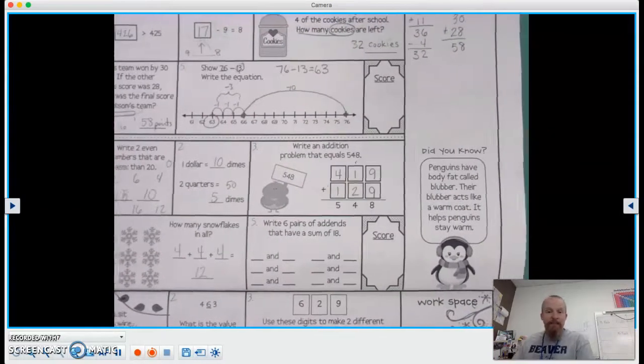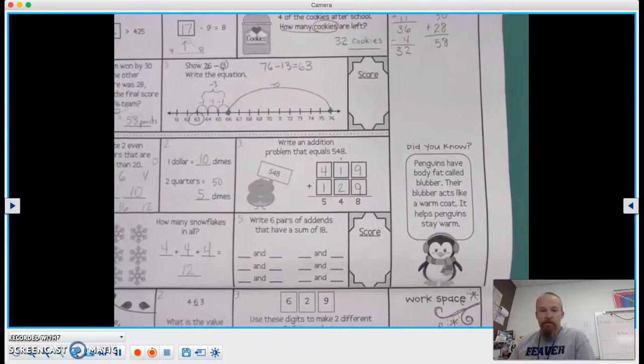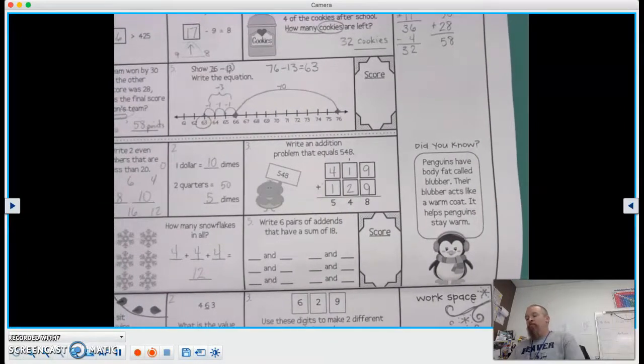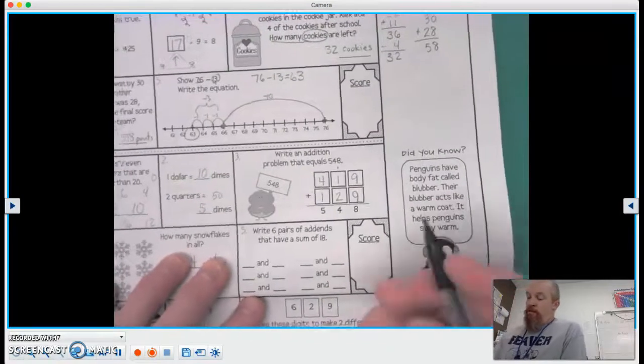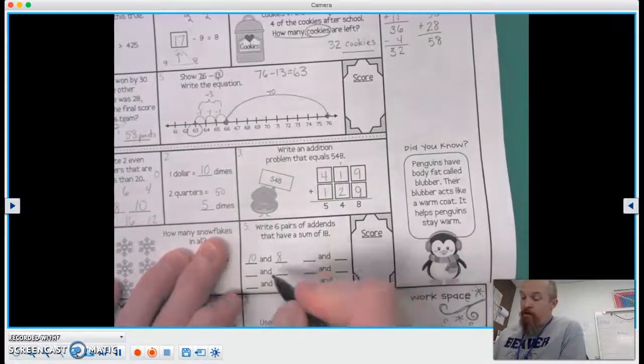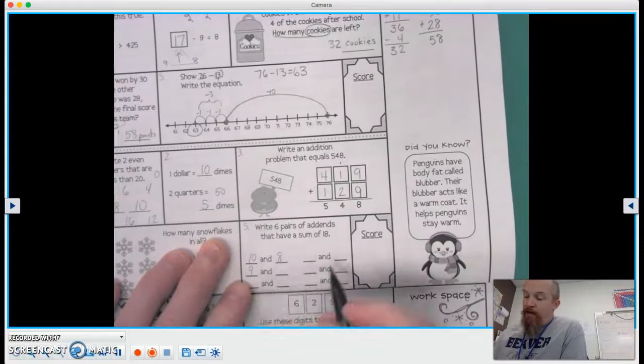And our last one for today, number 5. Write 6 pairs of addends that have a sum of 18. So we can go 10 and 8.